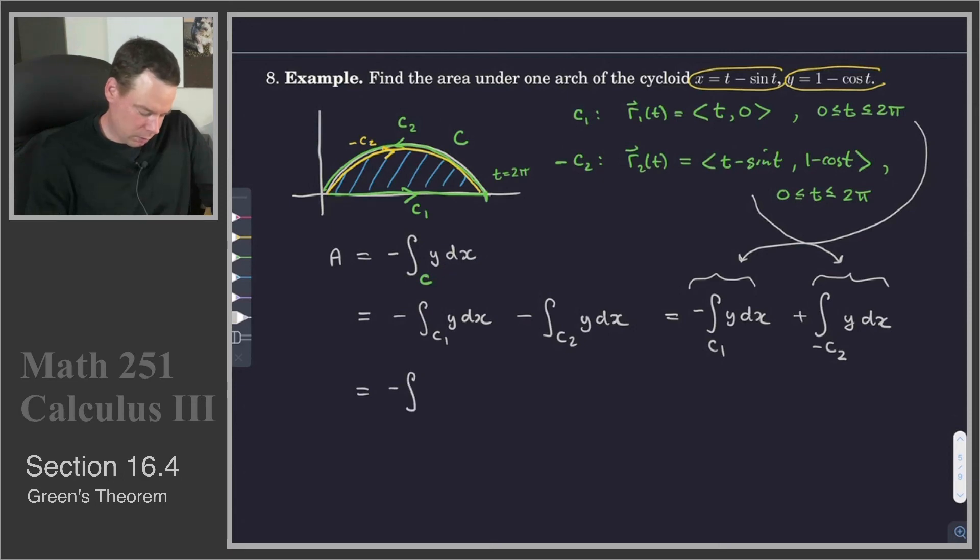So this is negative. Over the C1 integral, it's 0 to 2 pi. y, oh y is 0. dx, well x is t, so dx would be dt. But that doesn't matter, because all it is is we're integrating the 0 function. So this is going to be 0. So that first integral, the integral along the C1 curve is 0.